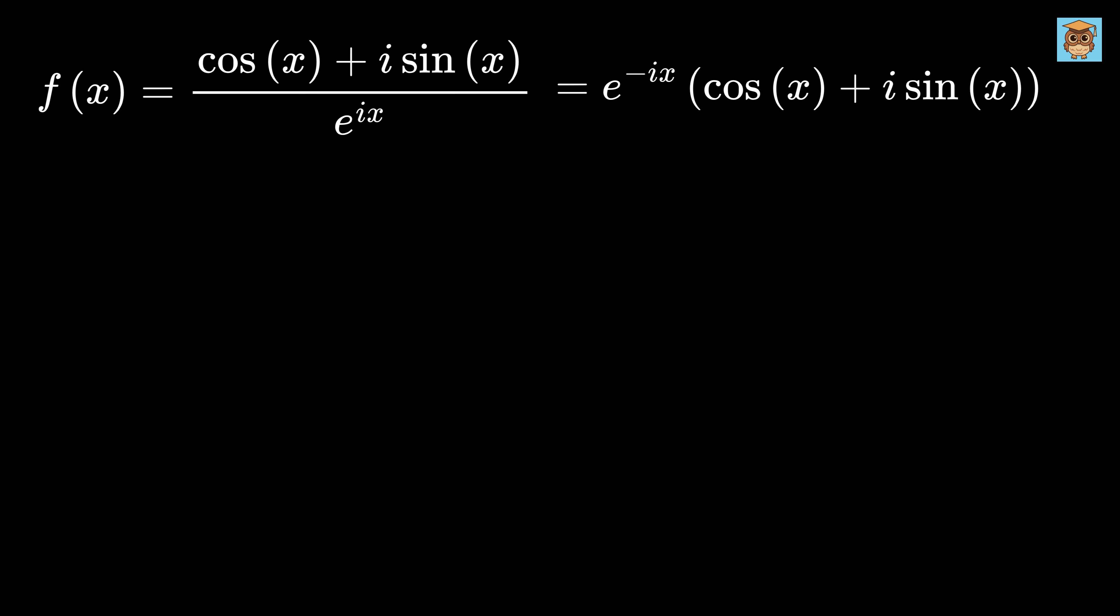Next, we will be differentiating this function f(x) with respect to x using the product rule. We know that the derivative of the product of two functions g and h is equal to g times the derivative of h or h prime plus the derivative of g or g prime times h.